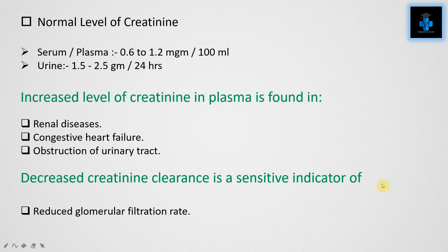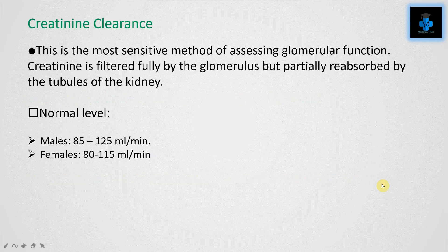Increased level of creatinine in plasma is found in renal diseases, congestive heart failure, and obstruction of the urinary tract. Decreased creatinine clearance is a sensitive indicator of reduced glomerular filtration rate. Creatinine clearance is the most sensitive method of assessing glomerular function. Creatinine is filtered fully by the glomerulus but partially reabsorbed by the tubules. The normal level of creatinine clearance in males is 85 to 125 mL per minute; in females it ranges from 80 to 115 mL per minute.